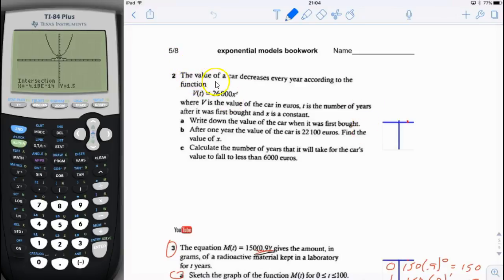Page 5, number 2. The value of a car decreases every year according to the function V(t) equals 26,000 x to the t.